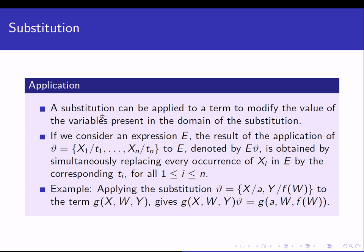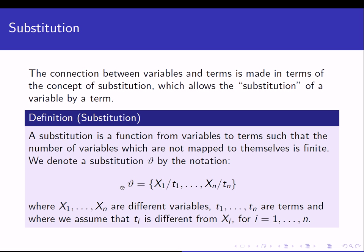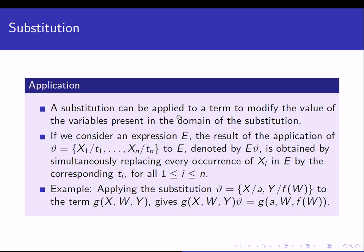If we have a substitution of this form, we can apply it to a term to modify the values of the variables present in that term. If we consider an expression e, then the result of applying theta to e — denoted e·theta — is obtained by simultaneously replacing every occurrence of each variable xi in e by the corresponding term ti.